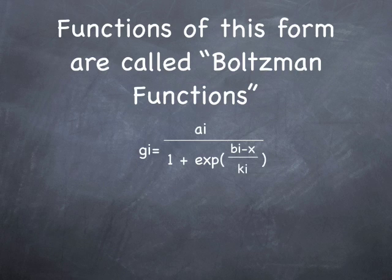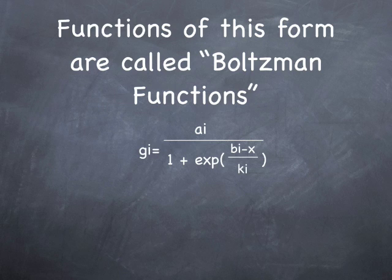Okay. Functions of this form are called Boltzmann's functions. So basically, a neuron in a rat's brain can be approximated by any function which can be represented as a sum of weighted Boltzmann functions.